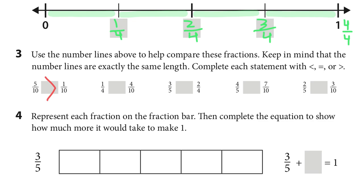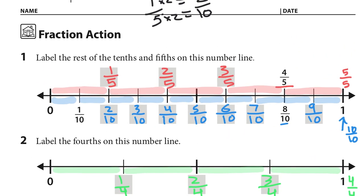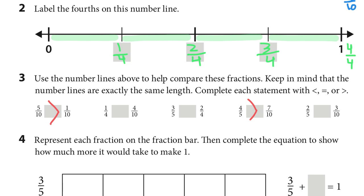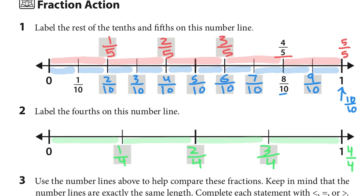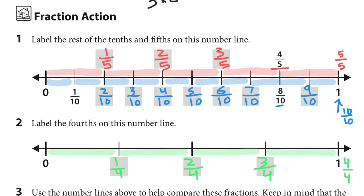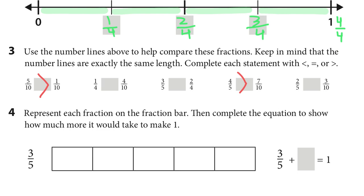What symbol are you going to write? The alligator has to eat the bigger number — so make that happen. I'm going to skip around and do fifths and tenths since they're on the same number line. Four-fifths versus seven-tenths: four-fifths would go to here, and seven-tenths would stop there. My four-fifths is longer, so the alligator eats the larger number — four-fifths is larger. Two-fifths and three-tenths: drawing along the number line, two-fifths is larger.